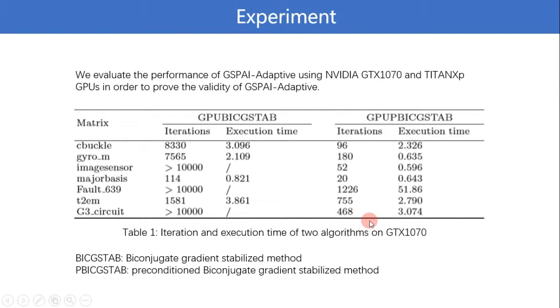While GPU preconditioned BiCGSTAB method can converge under 1,226 iterations. Meanwhile, for other matrices where GPU BiCGSTAB method can converge, the number of iterations and execution time decline dramatically using the preconditioner.